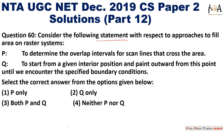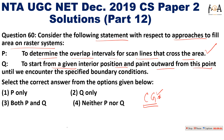The next question considers statements about approaches to fill area on raster systems, a topic from computer graphics. Every year, one question is asked from raster systems — you can visit the computer graphics playlist on our channel for important lectures on this. The statements refer to determining overlap intervals for scan lines crossing an area, and painting outward from an interior position until an unspecified boundary condition is encountered. Both points apply to raster systems, so option 3 is the correct answer.